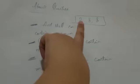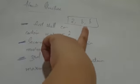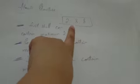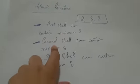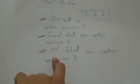For drawing the atomic structure, you must remember the formula which is 2, 8, 8. The first shell can contain maximum 2 electrons, the second shell can contain maximum 8 electrons.